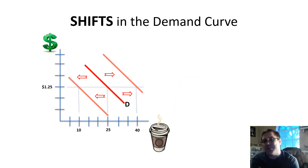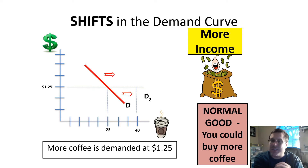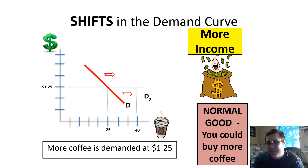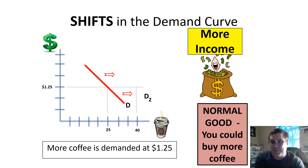Now let's look at things that can cause the demand curve to shift. First is more income for a normal good — people will just buy more. Instead of buying a small coffee, you'll buy a large. Or with gasoline, if you have a little extra money you can buy more for more road trips.